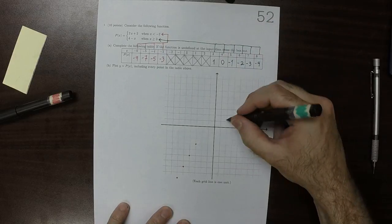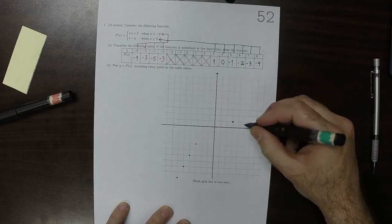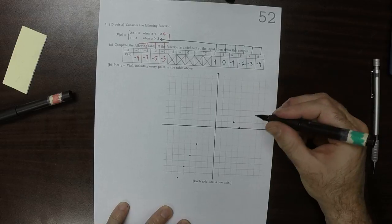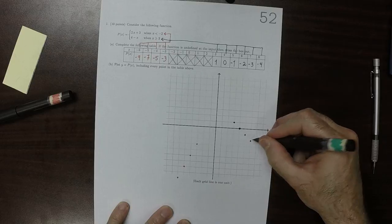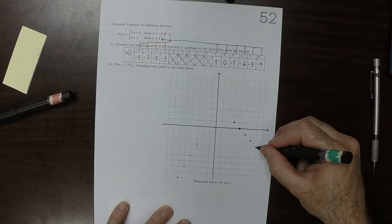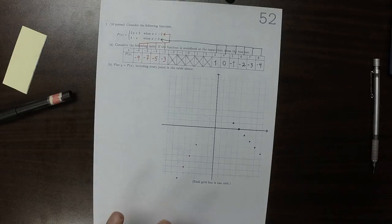At 3, we get 1, so 1, 2, 3, and then 1, 0, negative 1, negative 2, negative 3, negative 4.